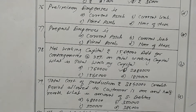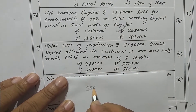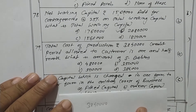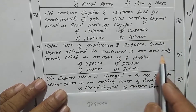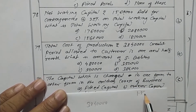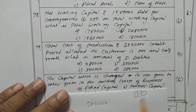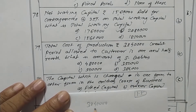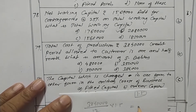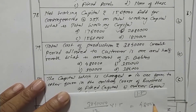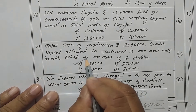Next question: total cost of production is rupees 38,40,000. Period allowed to customer is one and a half months. To find sundry debtors: 38,40,000 divided by 12 into 1.5 months gives rupees 4,80,000. Option A is the correct one.